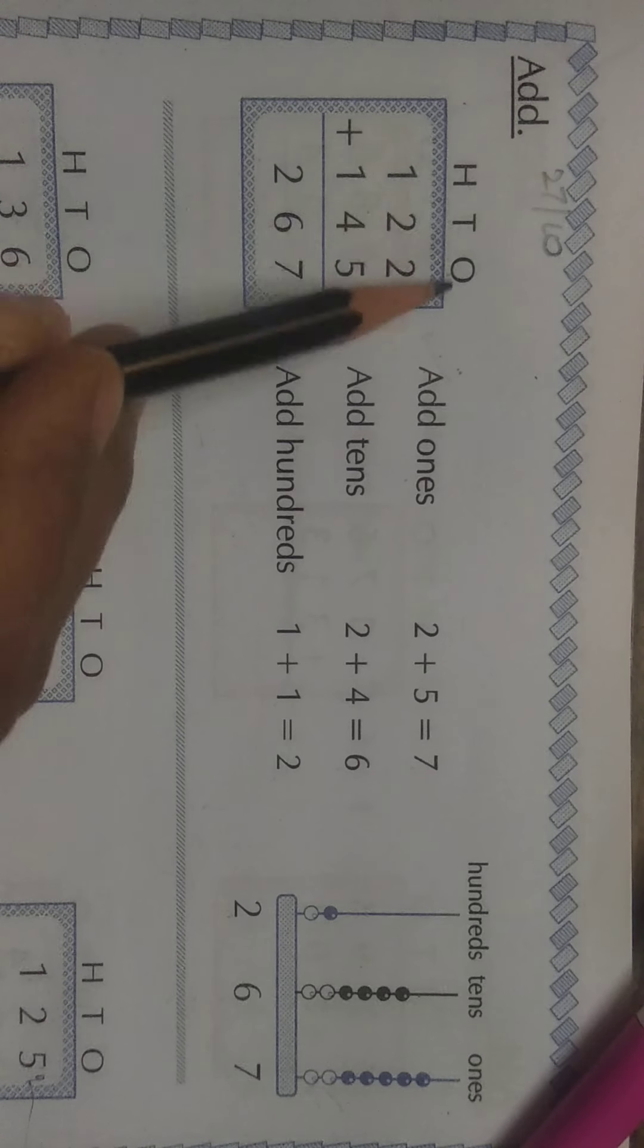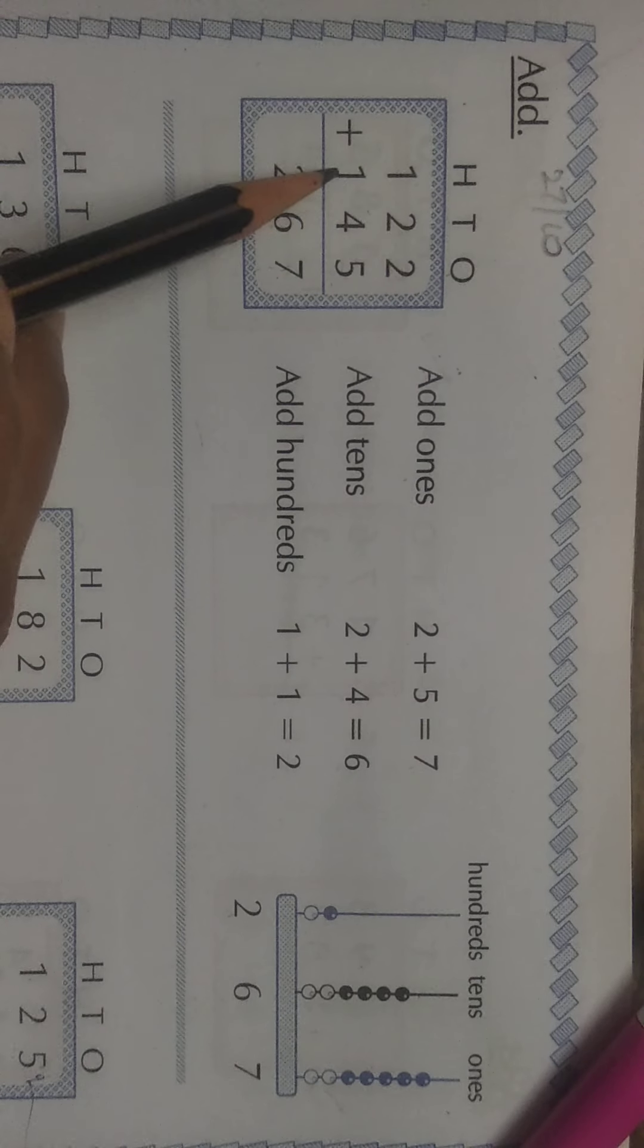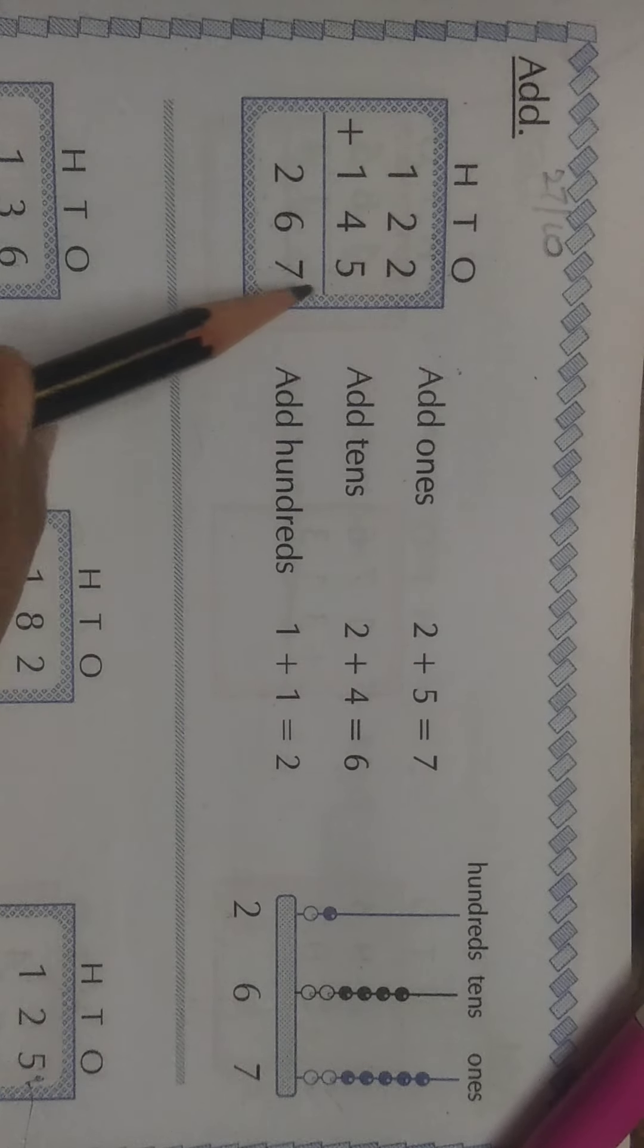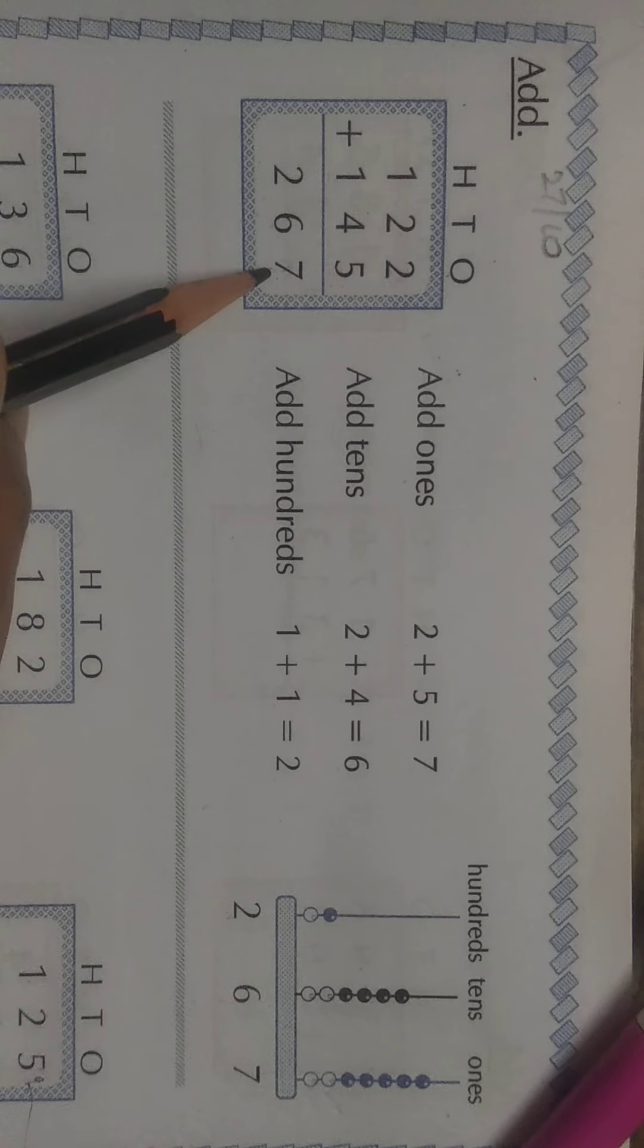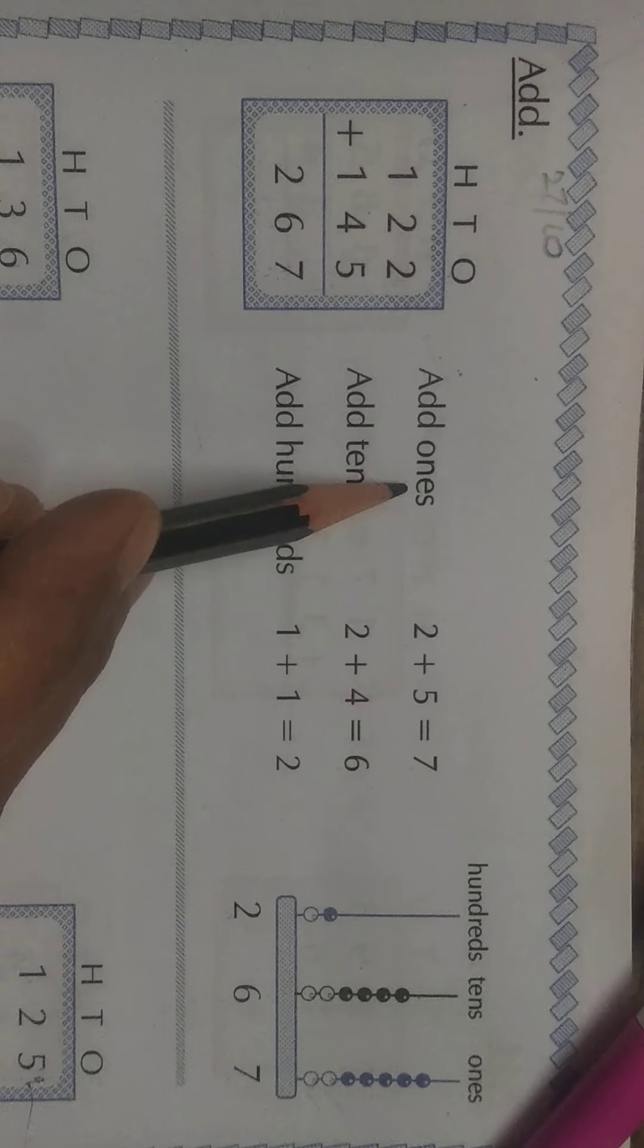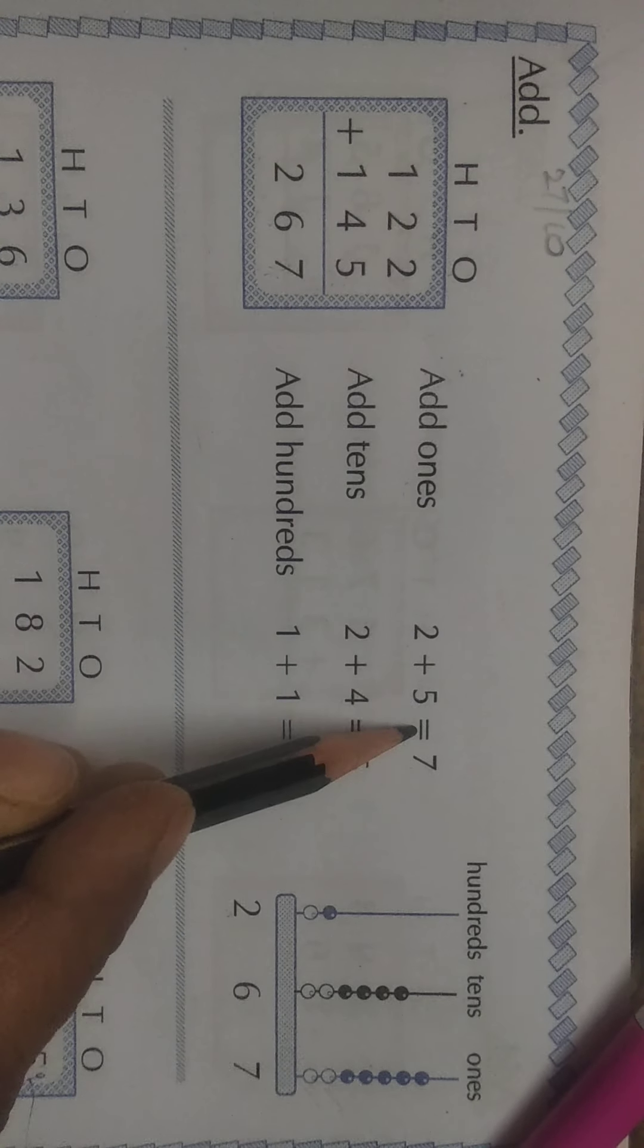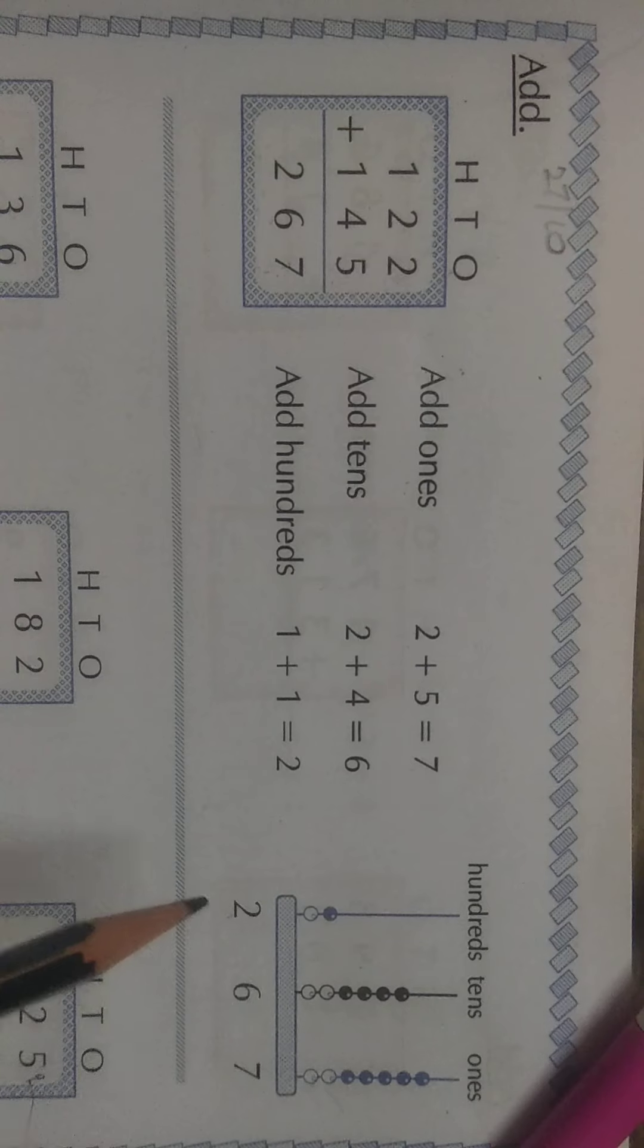Children, look at these places. Ones place, tens place and hundreds place. Whenever we add the two numbers, first we will add ones place numbers. Add ones. In ones place, what are the numbers? 2 and 5. So, 2 plus 5 is equal to how much? 7.